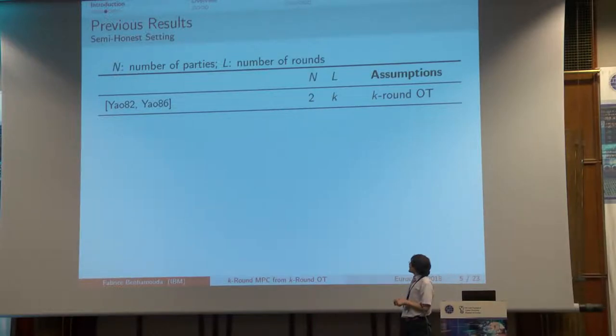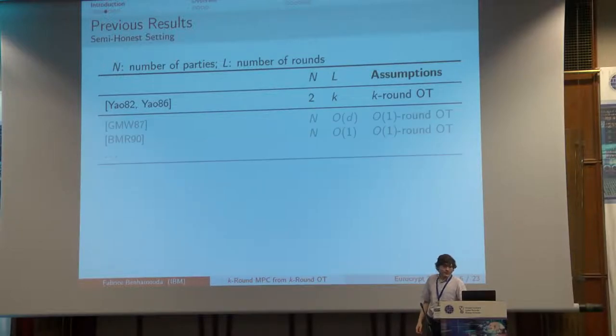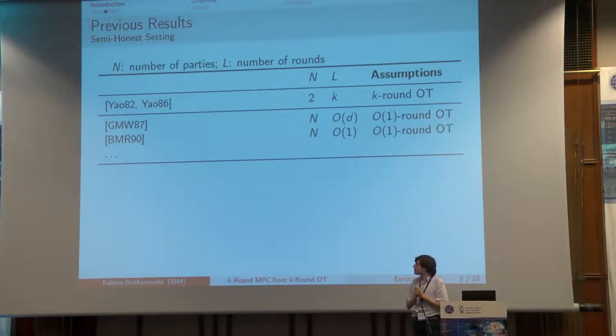As we saw before, in the 80s, Yao showed that if you have only two parties, you can construct a two-round MPC protocol from any two-round OT. But as soon as the number of parties is more than two, the problem is much more difficult. In the 80s, K-round MPC constructions showed how to construct a protocol with number of rounds linear in the depth of the circuit.